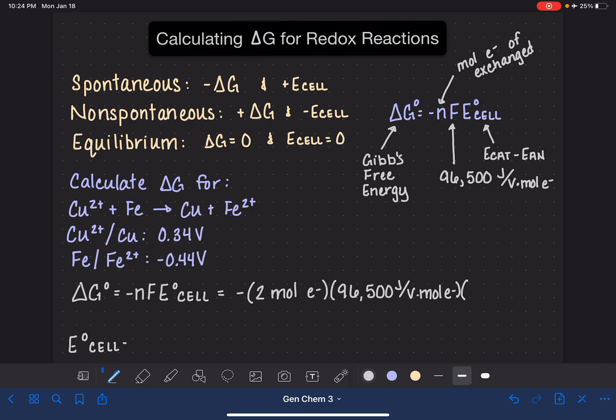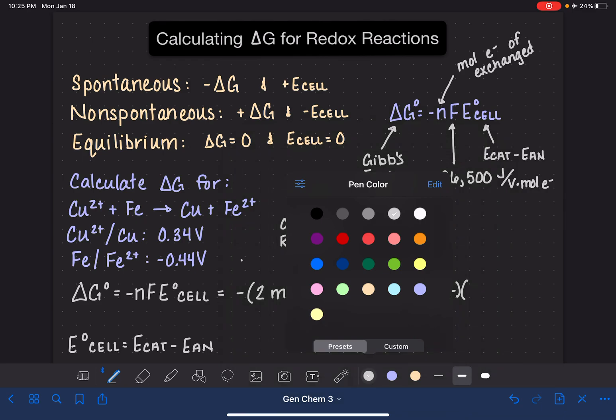Remember that E cell is the cathode minus the anode. We have a few tricks to help us remember things. We know that red cat means that the reduction is taking place at the cathode. And we also have oil rig, which tells us that oxidation is loss and reduction is gain. So when we look at these two reactions, copper going to copper, copper 2+ going to copper, this is taking place by the addition of two electrons. So the copper system is adding or gaining electrons, which means that it is the reduction.